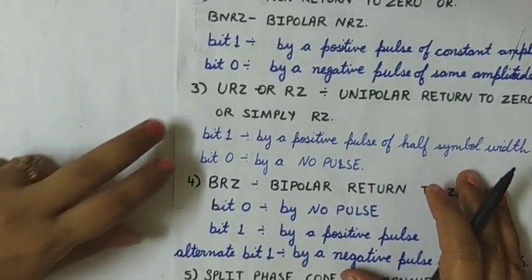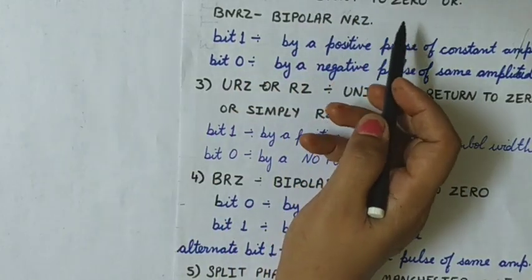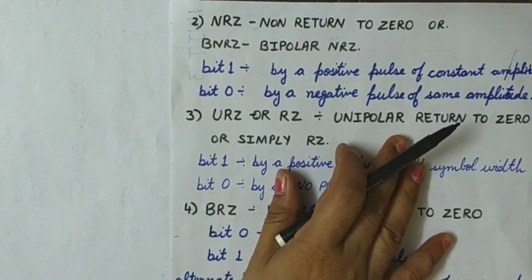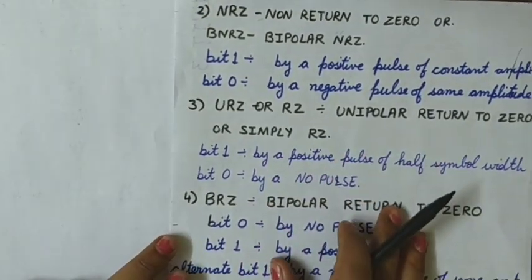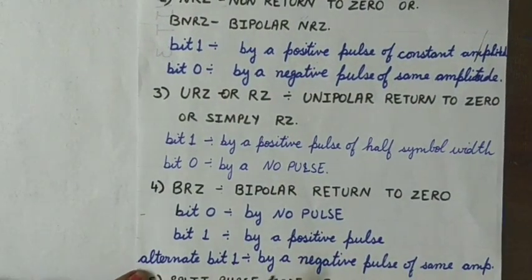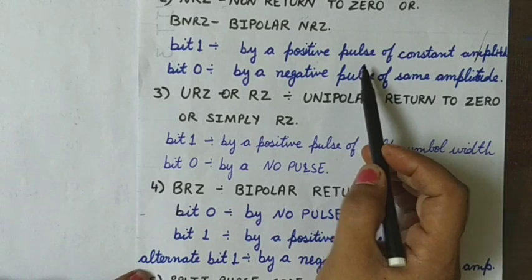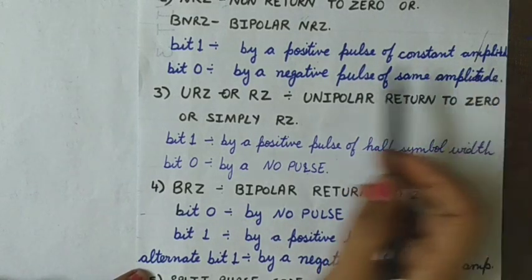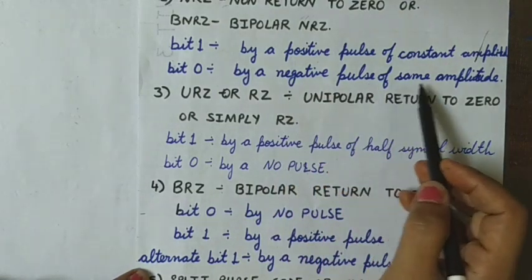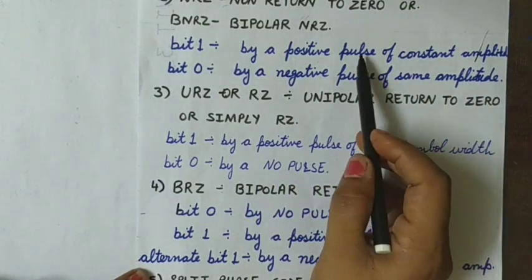The second coding scheme is NRZ, which is non-return to zero, also called BNRZ. Here the bit one is transmitted by a positive pulse of constant amplitude and symbol zero is transmitted by a negative pulse of constant amplitude — the same amplitude as that of symbol one.